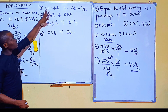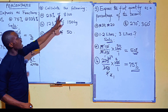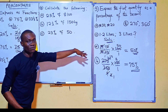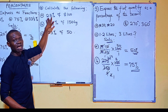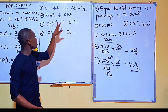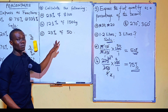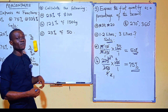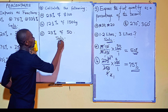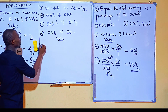Having seen how to express numbers as a percentage of another, the next important part is how to find the percentage of a given quantity. For example: 25% of $100, 12½% of 150 kg, 23% of 50, and so on. The key is to note that 'of' means multiplication.